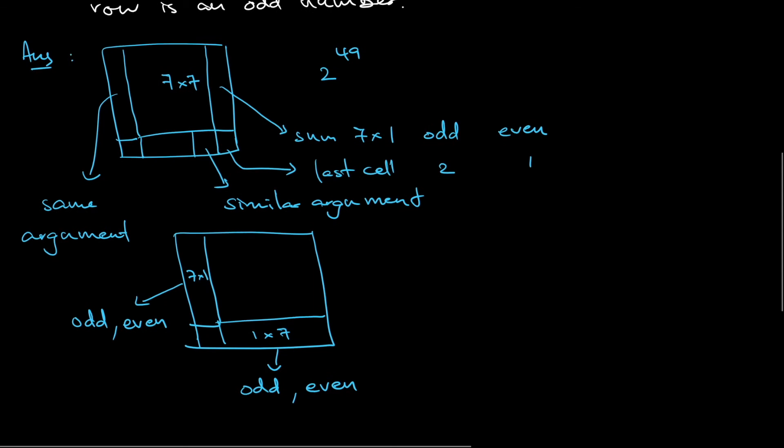So when both, if it's both odd, odd, or even, odd, even, odd, even, even. So this is the sum of the 7 by 1, this is the sum of the 1 by 7. If it is odd and odd, that means that this cell, this cell, let's call it cell x. Cell x I just need to put number 2, right? To maintain that the sum in each row is an odd number, the sum in each column is an odd number. If it is both even, the last case, I put number 1.